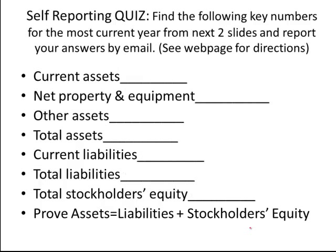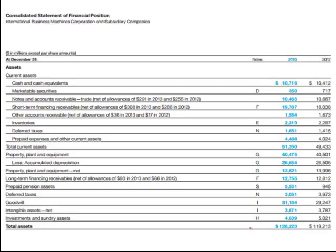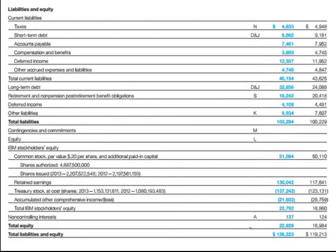It's time for your self-reporting quiz. We're going to look for those numbers again, but now for IBM. It takes two pages. Here's the first page of your quiz — the total asset piece of the balance sheet. Got your numbers? And here's the liabilities and equity portion of the balance sheet. Once you've finished your quiz, follow the directions on where you need to send it.